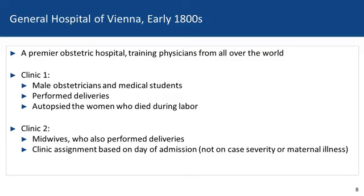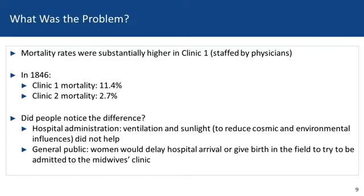There were two clinics within the obstetrics department. Clinic 1 had male obstetricians and medical students that performed deliveries, and they also had an additional responsibility of performing autopsies on the women who died during labor. In contrast, Clinic 2 was staffed by midwives who also performed deliveries, but their responsibilities did not include the performance of autopsies. Clinic assignment from the patient perspective was merely based on day of admission, with no differentiation by case severity or previous illness history. It was well known that mortality rates in Clinic 1 were substantially higher. In 1846, the Clinic 1 mortality was 11.4% compared with Clinic 2 mortality of 2.7%.